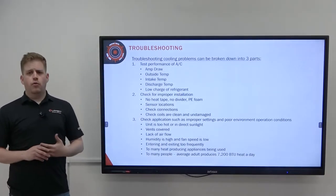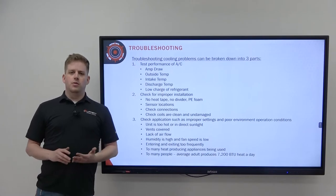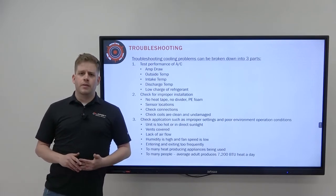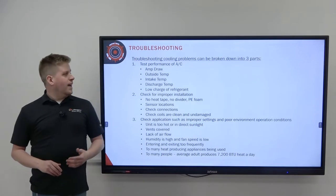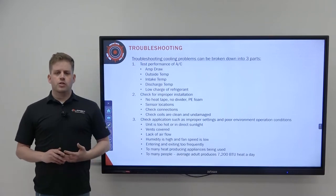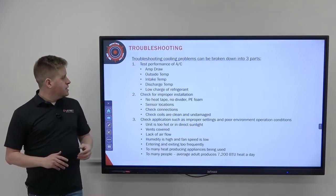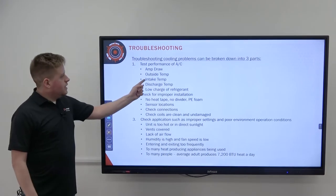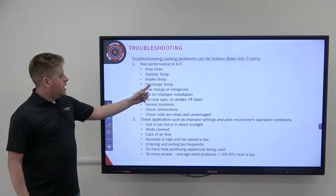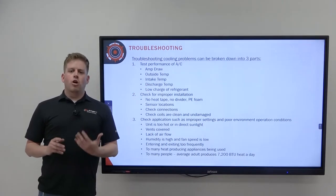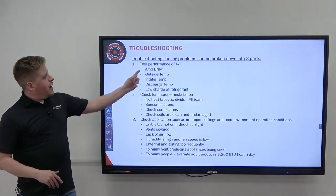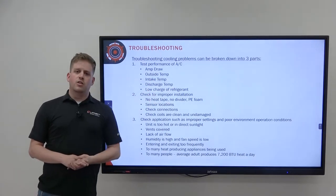To test performance of an air conditioner whenever a customer complains the unit is not cooling correctly, get it up and running and let it run for 15 minutes. After 15 minutes, take an amp draw on the blue compressor wire, take a temperature reading on the roof just outside the air conditioner, take a temperature at the intake or return air, and take a temperature at the closest discharge vent. From this information, you'll be able to tell whether the air conditioner has a low refrigerant charge.